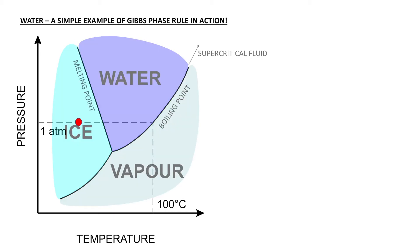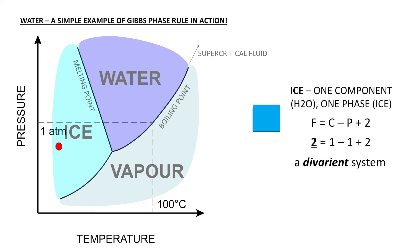Imagine a system represented by this red dot, which is currently sitting in the ice field. That red dot can exist anywhere in that light blue field. It is one component, H₂O, and one phase, ice. If you put that into Gibbs phase rule, F = C - P + 2, we have one component, one phase, plus 2, which equals 2.